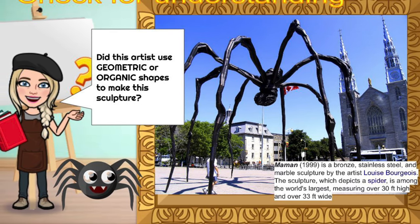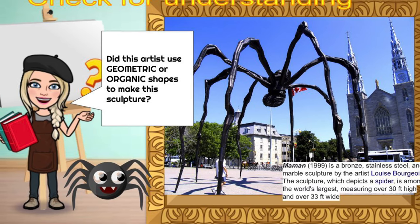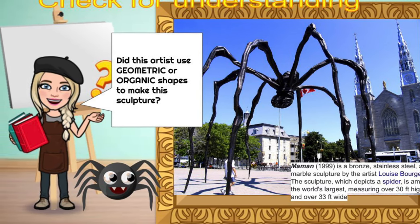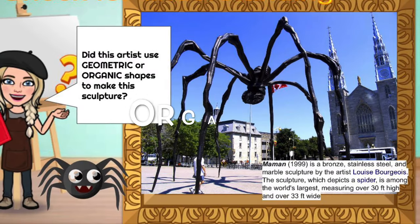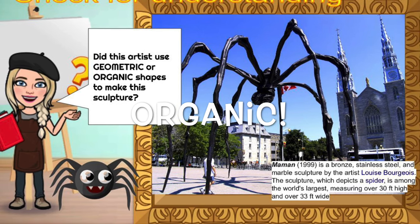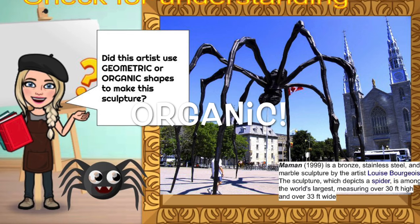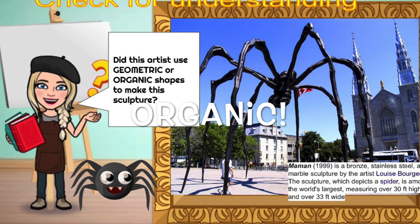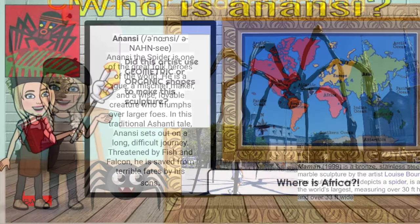Did this famous artist who made this bronze sculpture of a spider use more geometric shapes or organic shapes? Interesting — I would have to say organic, probably because of the shapes that are more irregular, curved, and they don't really have straight and even edges. So I'm going to say organic for this one.